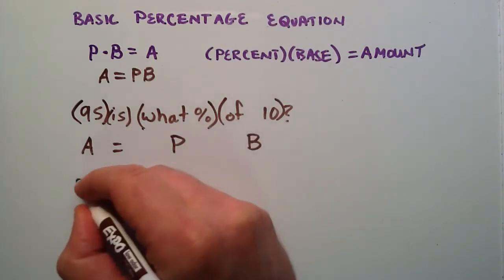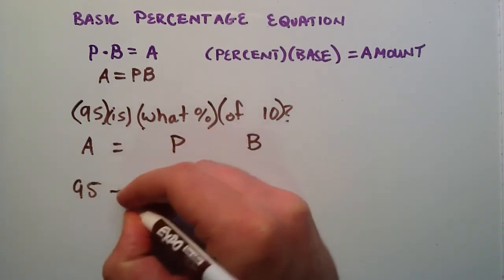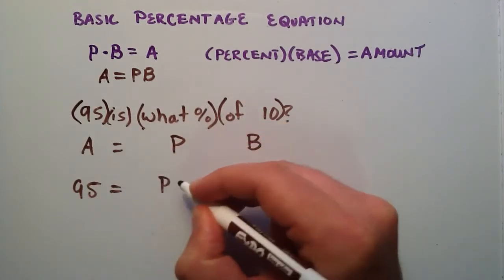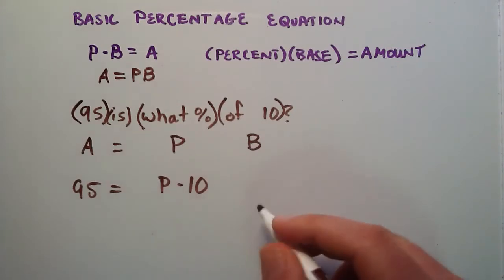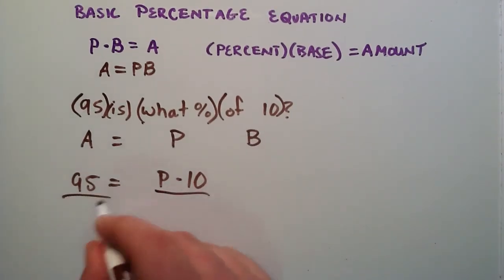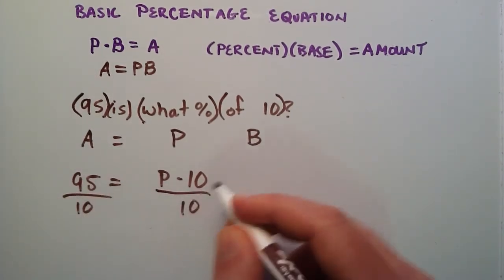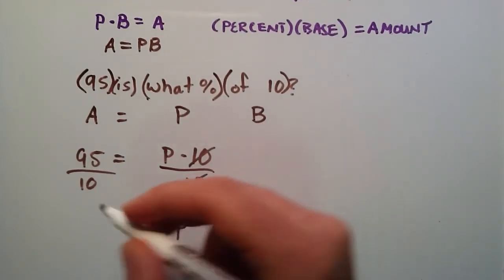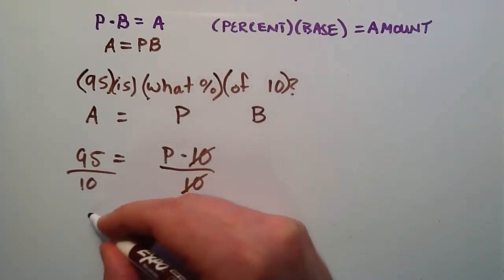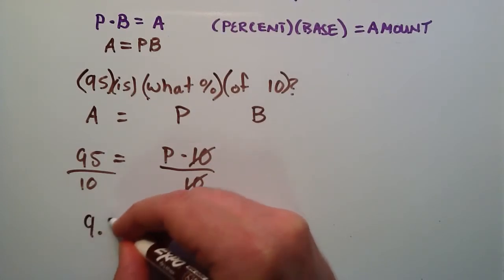In our case we have 95 equals the percent times the value 10. To solve this we simply divide each side by 10. 10 over 10 cancels giving us P equals 95 over 10. And 95 over 10 is 9.5.